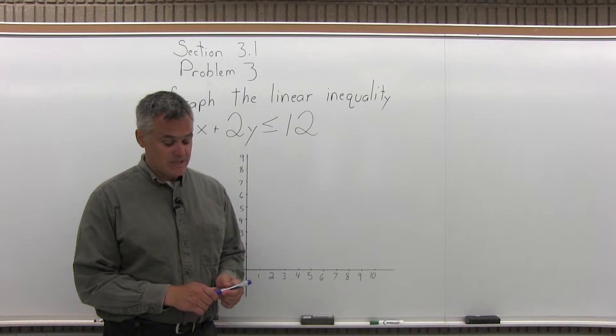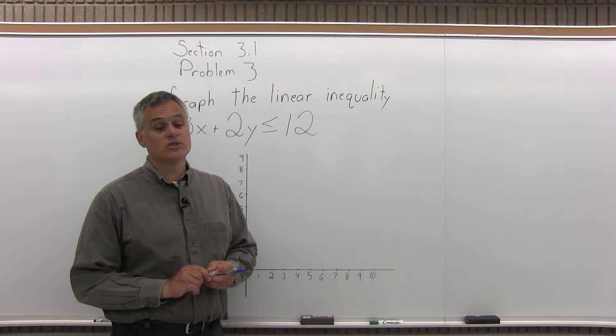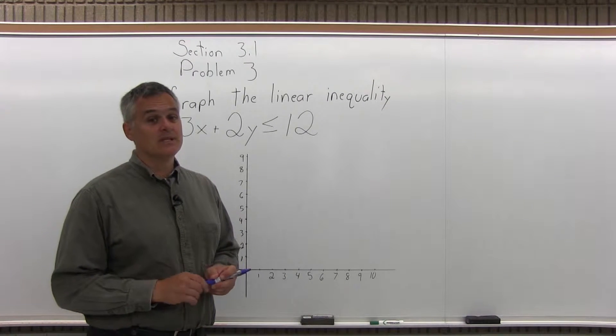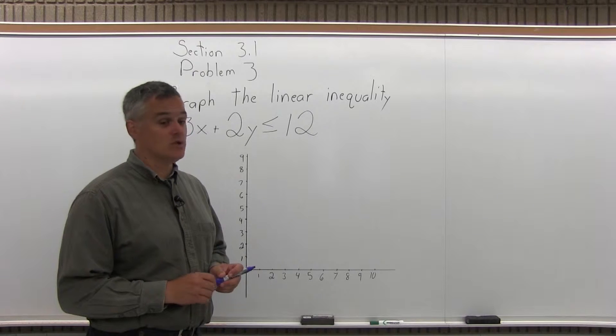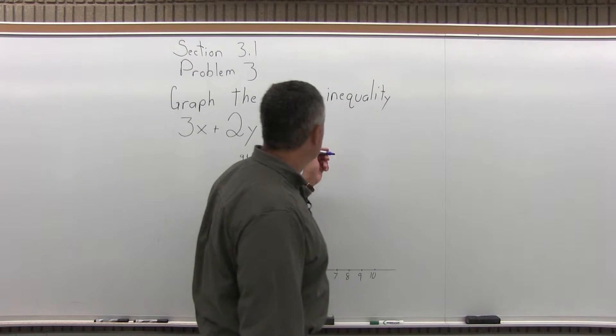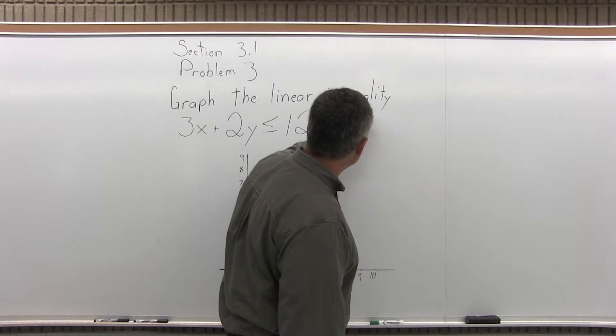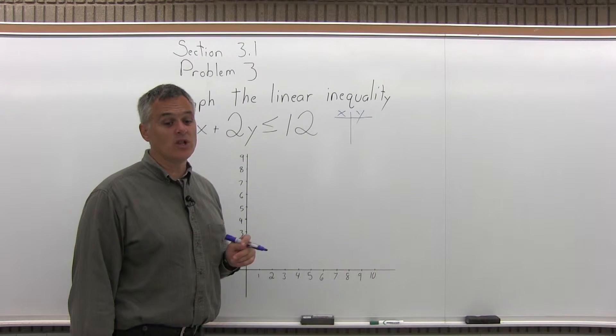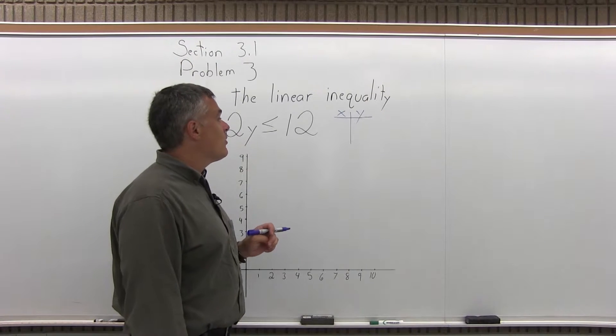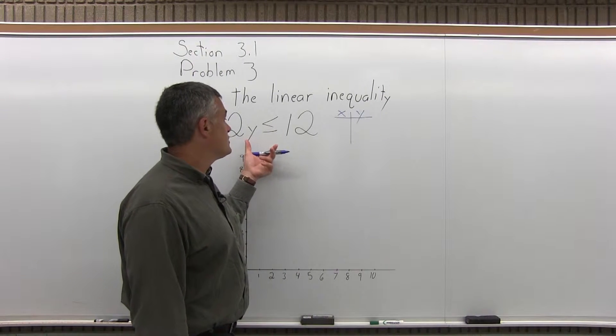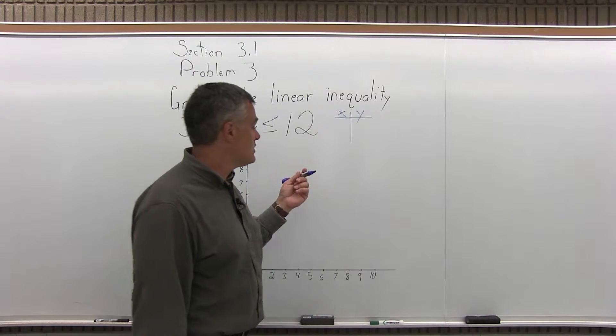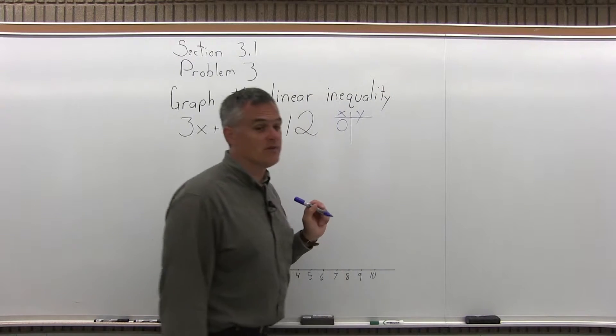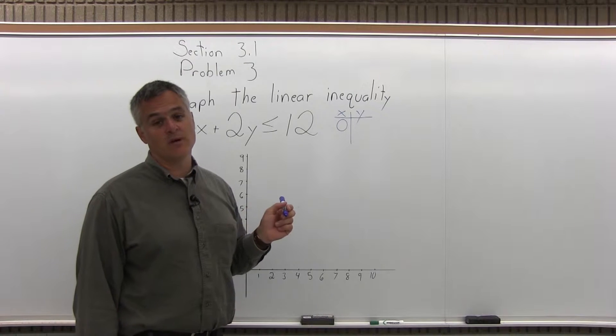Step one of the four steps is pretend that the linear inequality is just a linear equation and find two points that make the equation true. So the way I do that is I make a little chart next to the linear inequality that I have to graph and I have an x column and a y column and I want to find the x y value that makes this true if I'm pretending it's an equation. So the easiest value to deal with is if I let one of the variables equal zero and I figure out the other one. And I can put in other things than zero but zero is by far the easiest.